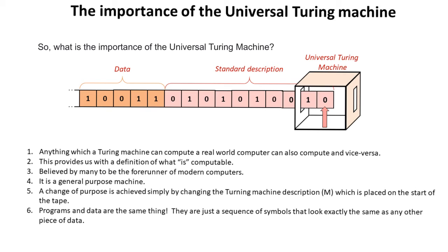A change of purpose for this universal Turing machine is achieved simply by changing the Turing machine description M, which is placed at the start of the tape.